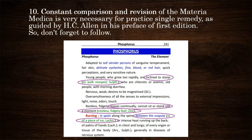Ten, constant comparison and revision of materia medica is very necessary for practice of single remedy, as carried by HCLN in its preface of the first edition. For example: in Phosphorus, young people who grow too rapidly are inclined to stoop, but in Sulphur, to walk stooped. In Phosphorus, restless and fidgety — moves continually, cannot sit or stand still a moment — but in Zincum, restless fidgety feet. In Phosphorus, burning in spots along the spine between the scapulae; in Lachesis, sensation of a piece of ice between the scapulae.